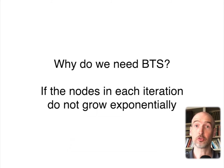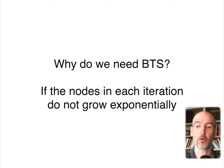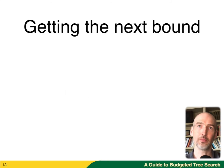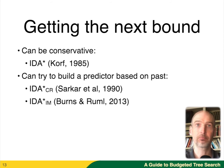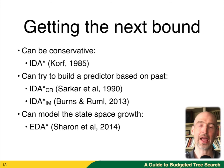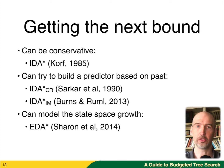So why do we need budgeted tree search? If the nodes in each iteration do not grow exponentially, then we need something like budgeted tree search to make sure that they do grow exponentially. The big question is: where do we get the next bound for search? In this paper, we showed that you could grow with a different process to be able to get this exponential growth.